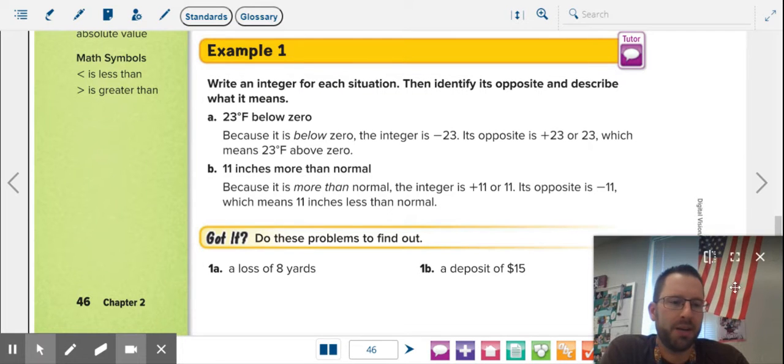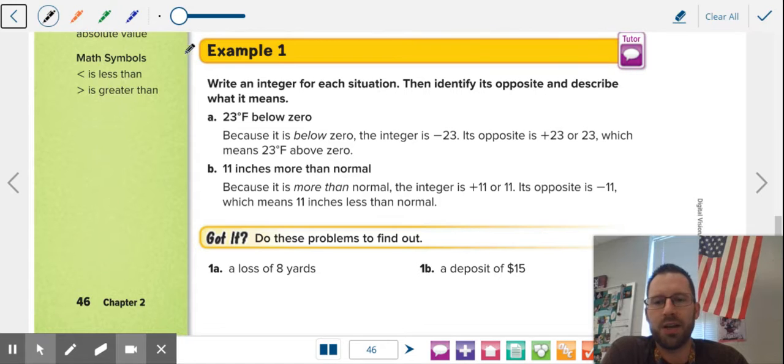Now, first thing we want to talk about is how to write an integer. You need to determine, is my number going to be on the positive side of the number line or the negative side of the number line? So you're going to look for clues in the phrase or the sentence. So here we're talking about a loss of eight yards, right? Loss is a negative thing, so negative eight.